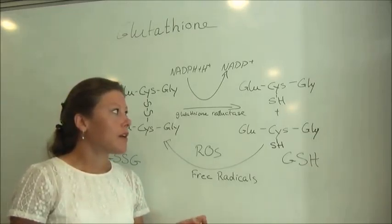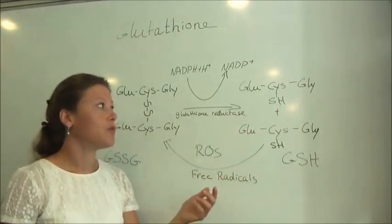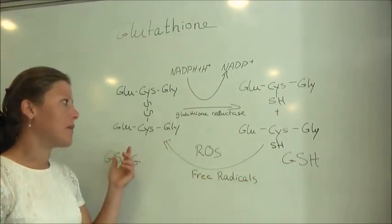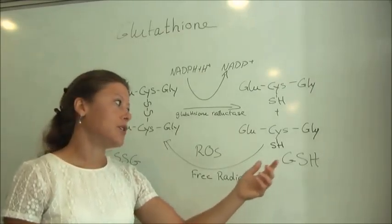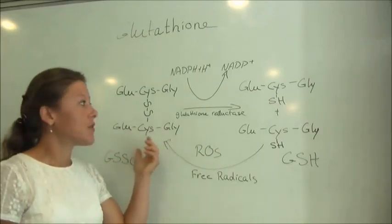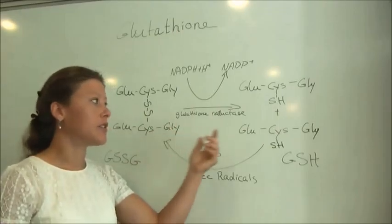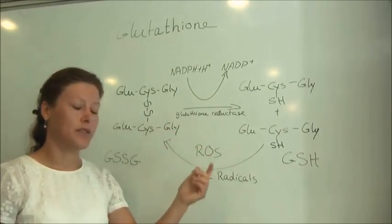Reduced glutathione is a tripeptide. Glutathione exists in two forms: the reduced form and the oxidized form. The reduced form will scavenge the cells from free radicals and by doing so will become the oxidized form, and the oxidized form can be reduced back to the reduced form under energy consumption in the presence of glutathione reductase.